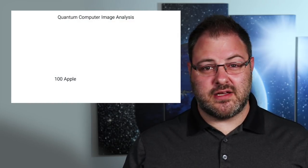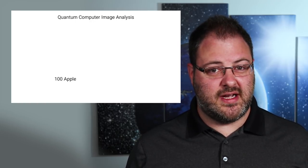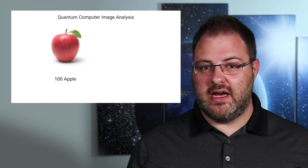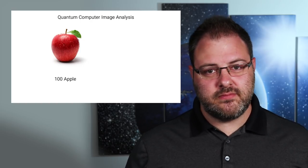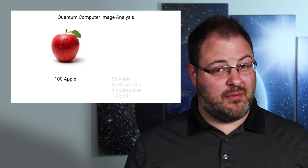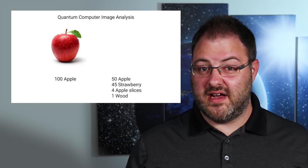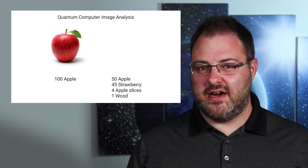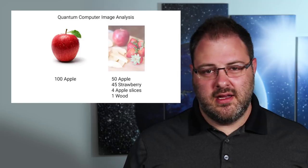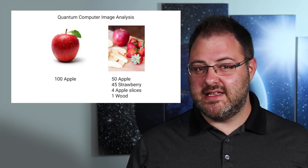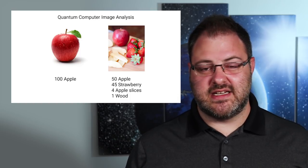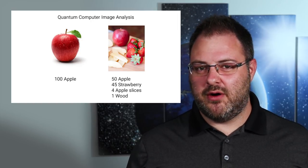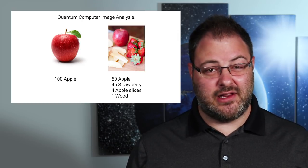For example, if you ask a quantum computer to identify an image of an apple 100 times and it returns the label 'apple' 100 times, then you know the confidence level is extremely high. However, if the computer returns 'apple' only 50 times, 'strawberries' 45 times, and a few other labels 5 times, then you know it's fairly confident that it's an apple but thinks it also has similarities to strawberries. If the image contains both an apple and strawberries, then it would be perfectly correct in its analysis. So the uncertainty is not at all a bad thing — it can actually be an extremely powerful tool when you ask the computer to make complex decisions and learn about the world.